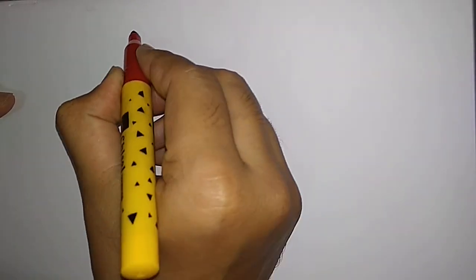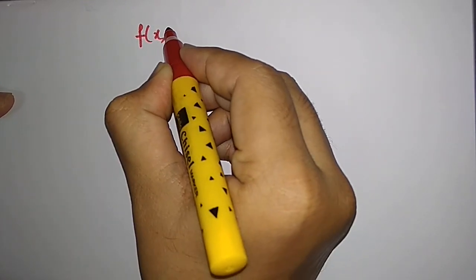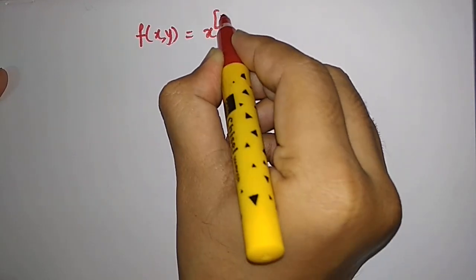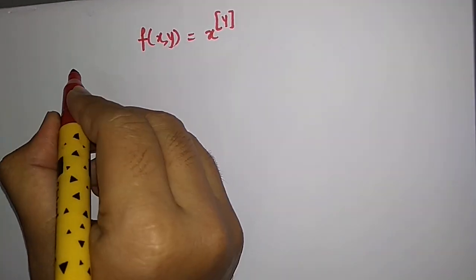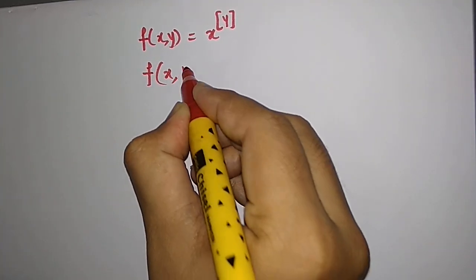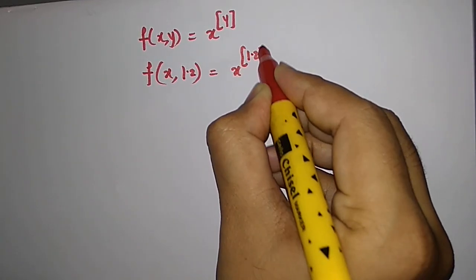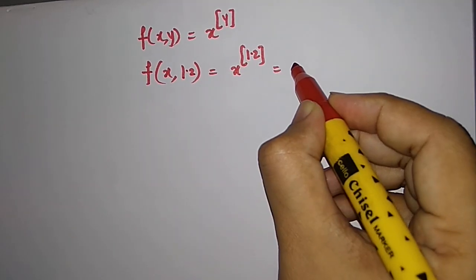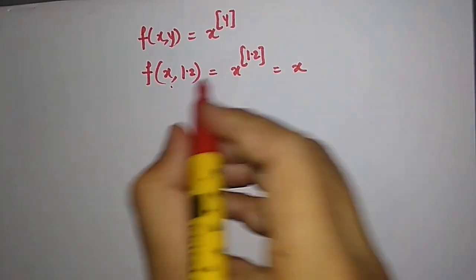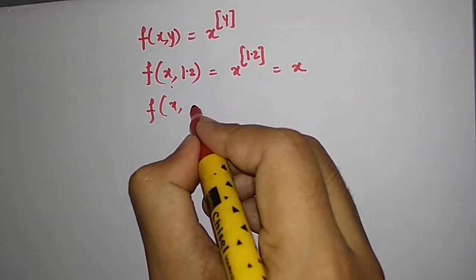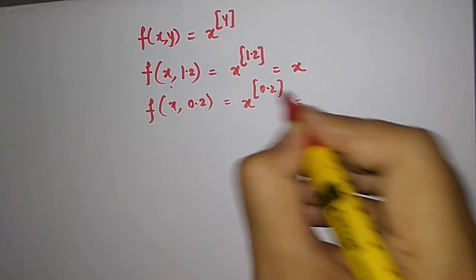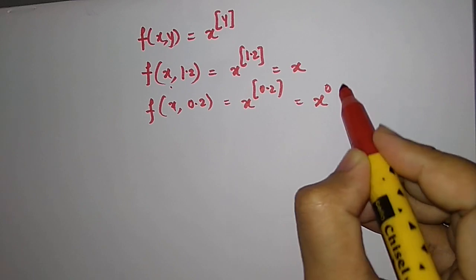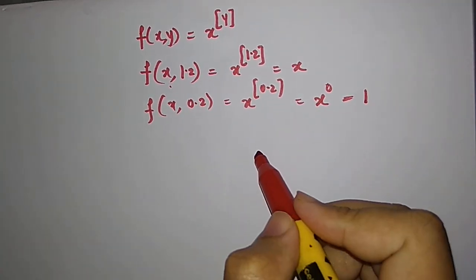So it seems that the function is complicated to visualize, but let me give you a few examples. The function was f(x,y) = x raised to the integer part of y. For example, f(x, 1.2) will be x raised to the integer part of 1.2, which is 1. So the image of such points is just x. And if you have f(x, 0.2), the integer part of 0.2 is 0, so it will be x raised to 0, which is just 1.